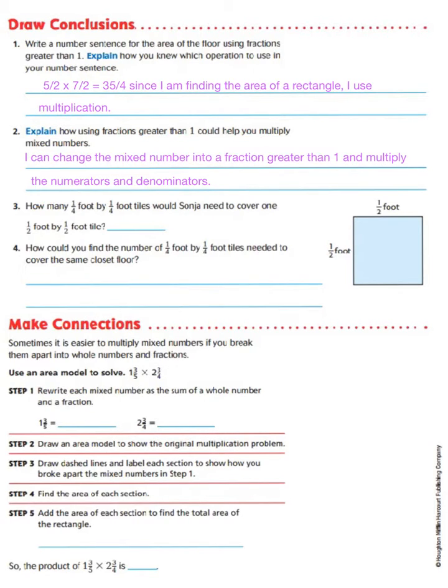Now, how many 1/4 foot by 1/4 foot tiles would Sonia need to cover 1 1/2 foot by 1 1/2 foot tile? And, of course, she would need 4 tiles. So, how could you find the number of 1/4 foot by 1/4 foot tiles needed to cover the same closet floor? Well, to answer that question, I could multiply 35 one 1/4 foot tiles by 4 since it takes 4 one 1/4 foot tiles to cover 1 one 1/2 foot by 1 1/2 foot tile.